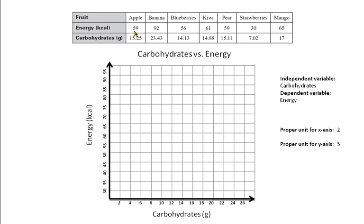We're going to plot the apple point. We need to go to 15.25, so we're going to find on the x-axis about where that would be. 15 is right in between 14 and 16, and we're approximating what that 0.25 is because we don't have a large enough space to really see that. So we're about here for 15.25, then we go up the y-coordinate to 59 — just about 60 — and our point goes right there.